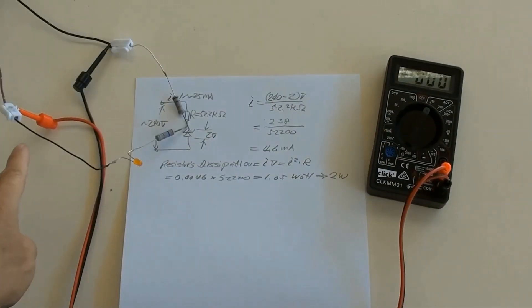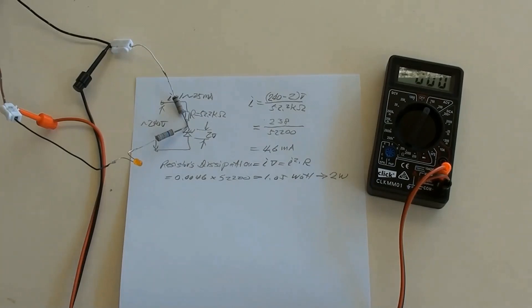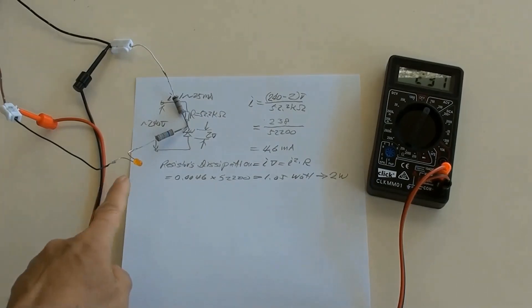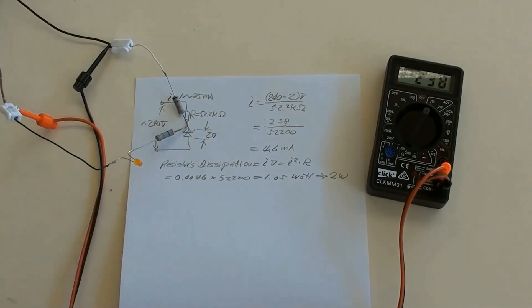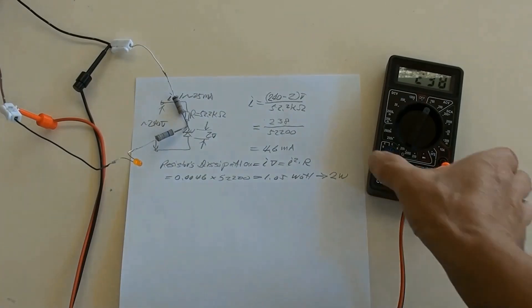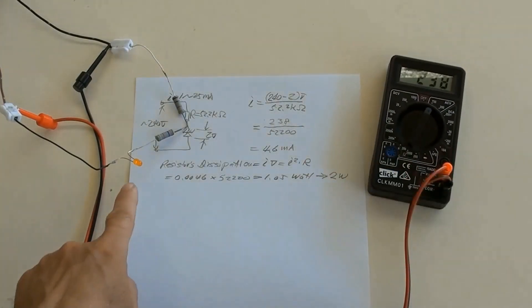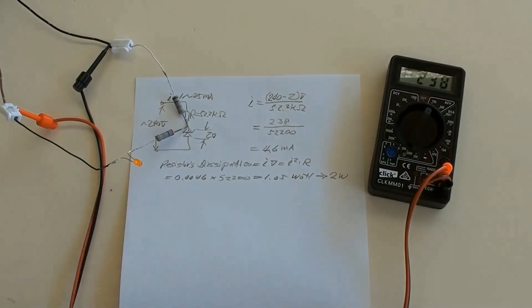This circuit has been connected to the power supply already. Switched power on — the LED lit. And power off. Again, switched power on, then the LED lit. Live voltage at the moment is 238 volts. And power off.